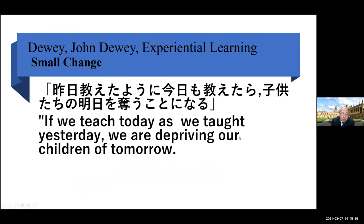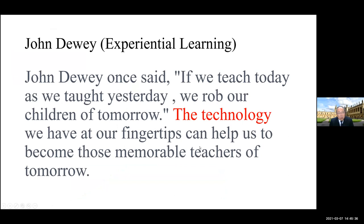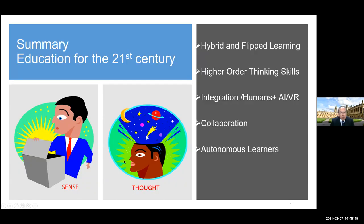Before I finish my presentation, John Dewey once said: 'If we teach today as we taught yesterday, we are depriving our children of tomorrow.' And the technology we have at our fingertips can help us become those memorable teachers of tomorrow. To sum up my presentation: education for 21st century skills, hybrid and pre-planning, we have to emphasize higher-order thinking skills, and the integration of human plus AI and VR, and collaboration, so students could become autonomous learners.